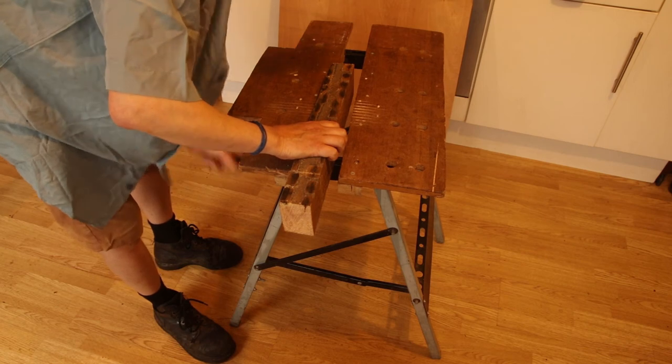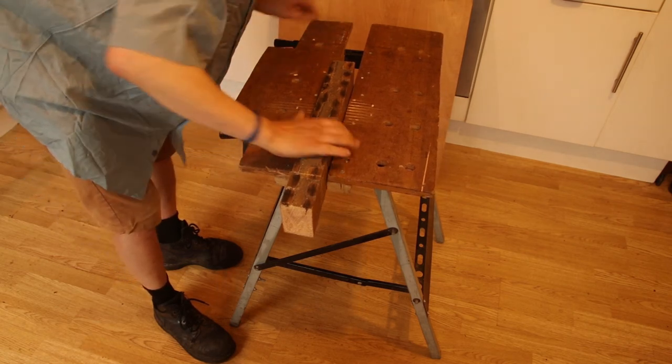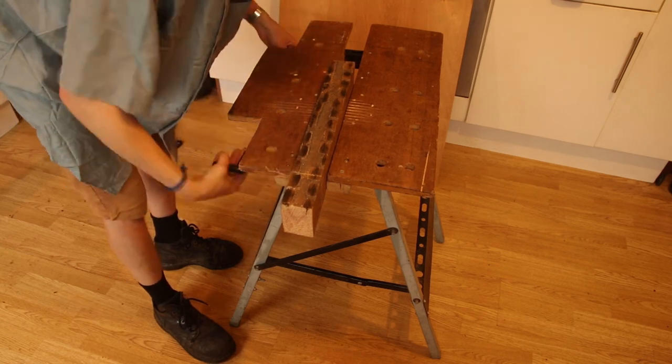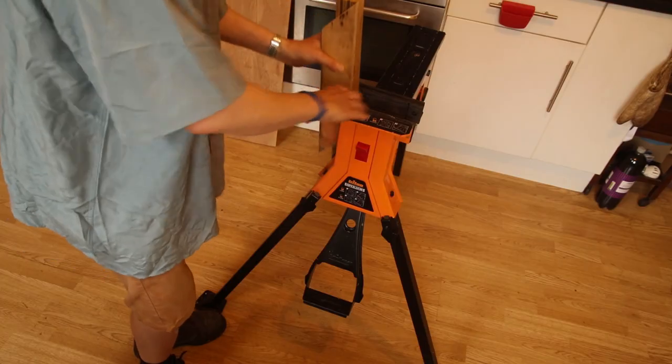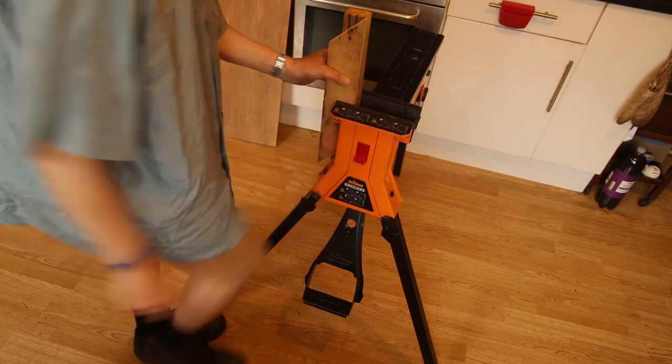So all in all, I'd recommend the Triton Superjaws. It's so much easier than using work benches and all that fiddling around. It's just so quick, it's a single-handed operation, it's just a pleasure to use. I paid around £80 for mine.